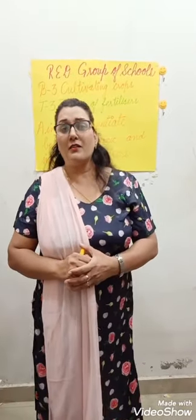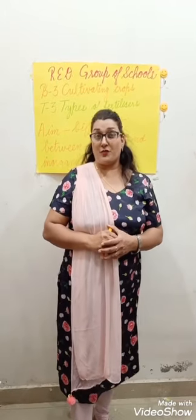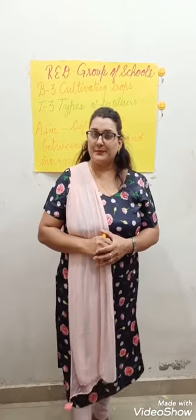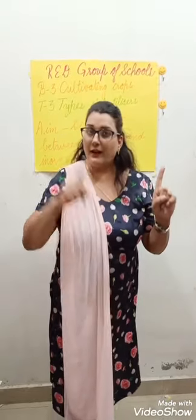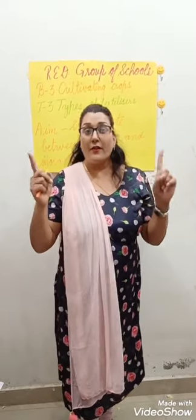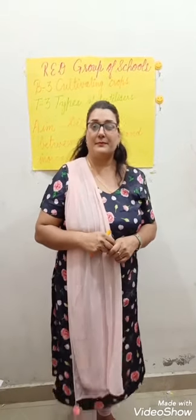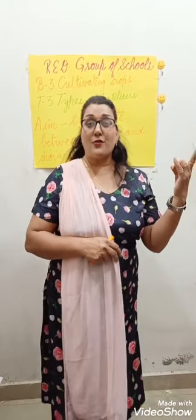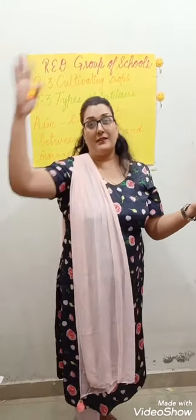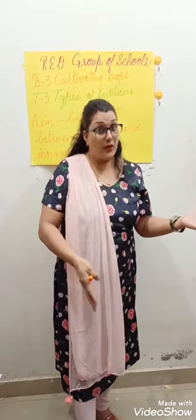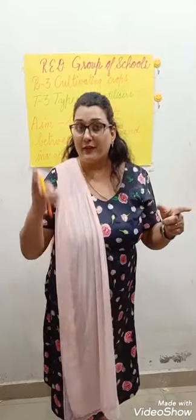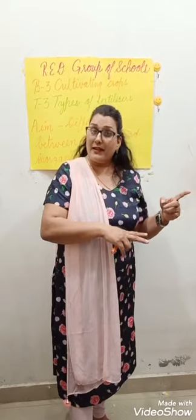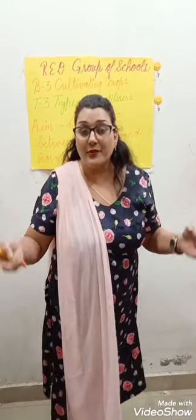Let's do a little revision of the previous topic. We read about the types of crops — there are two types. One is Kharif and the other is Rabi. Rabi crops are grown in winter and harvested in summer; example is wheat. Kharif crops are grown in summer and harvested in autumn.